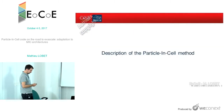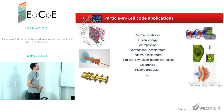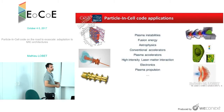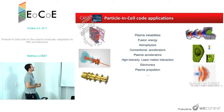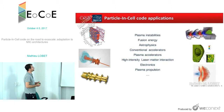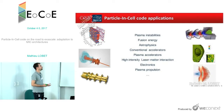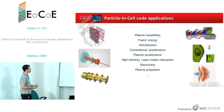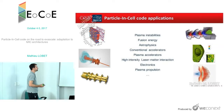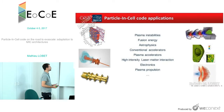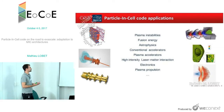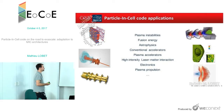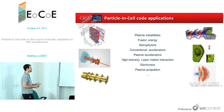Let's start with the description of the particle-in-cell method. Particle-in-cell methods are used in a wide range of topics and applications. They have the goal to simulate plasmas and particle interactions. You can find them in fusion energy, in astrophysics, for the simulation of accelerators — conventional accelerators, but also plasma accelerators or laser accelerators. They are used a lot in laser-matter interaction, also in electronics and in plasma propulsion.